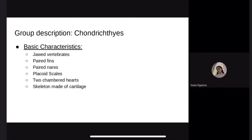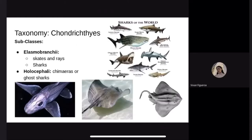We will be moving on to the class Chondrichthyes. The word Chondrichthyes originates from the Greek word chondros, meaning cartilaginous fish. Chondrichthyes are jawed vertebrates with paired fins, paired nostrils, placoid scales, two-chambered hearts, and most importantly, a skeleton made out of cartilage.